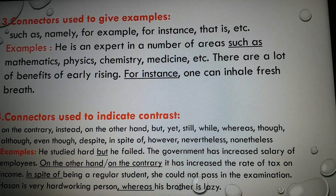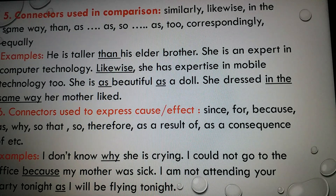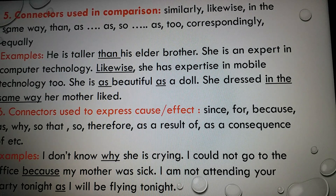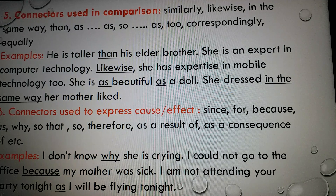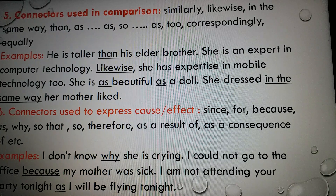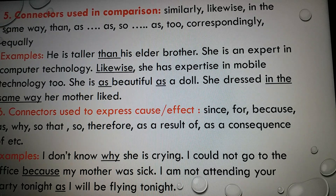Number five: connectors used in comparison. There are some connectors used to show comparison, for example: similarly, likewise, in the same way, as...as, so...as, correspondingly, equally. Examples: 'He is taller than his elder brother.' 'She is an expert in computer technology; likewise, she has expertise in mobile technology too.' 'She is as beautiful as a doll.' 'She does it in the same way as her mother.'